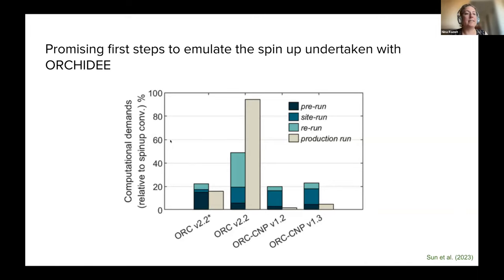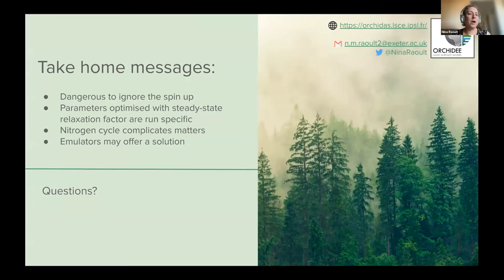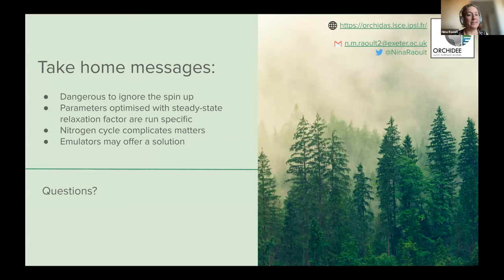The take-home message is: it's dangerous to ignore the spin-up, but when we use a multiplicative factor to account for it, the parameters we find become very dependent on that factor. When we add the nitrogen cycle, things get very complicated. Hopefully, emulators will help us find a better solution in the future.